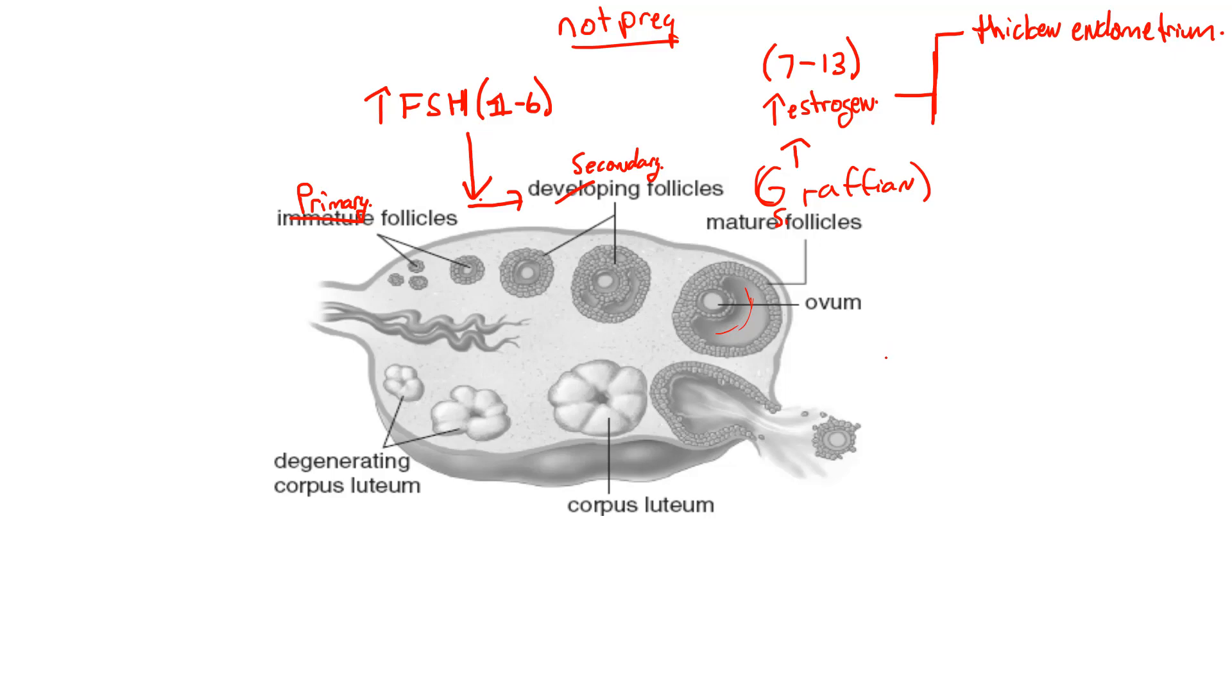And of course that's where, if the egg is fertilized, now at this point nothing's been fertilized. We actually haven't even released the egg into the oviduct to be fertilized, but we have to prepare the uterus in case we do get this egg fertilized. So we do that by thickening the endometrium. Of course, that's where a fertilized egg would actually embed into the endometrium lining or the endometrium wall of the uterus.